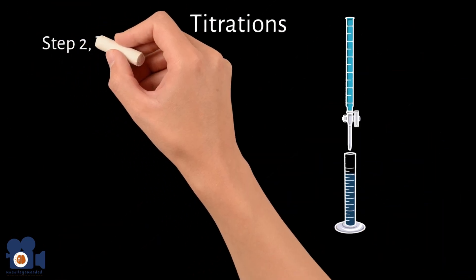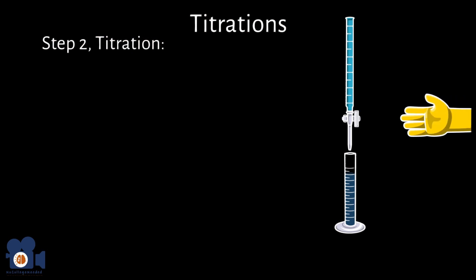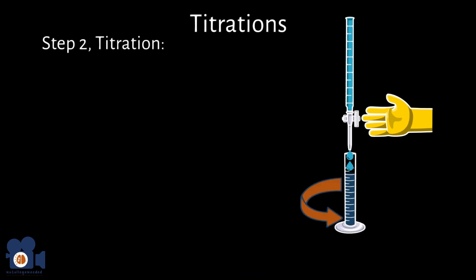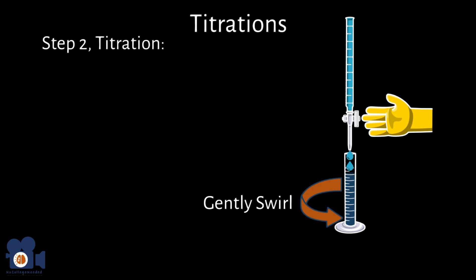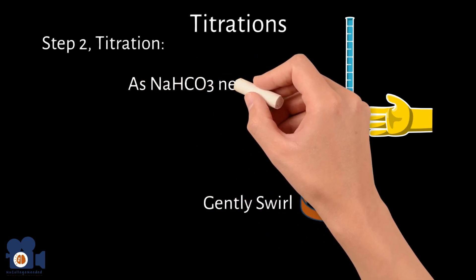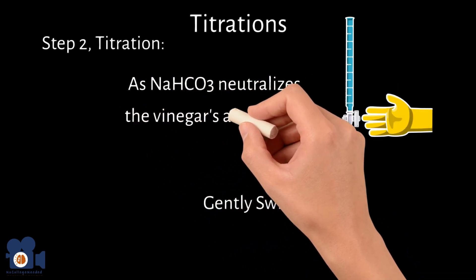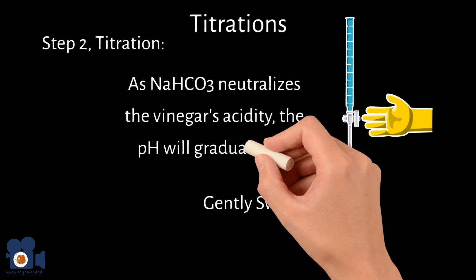Step two, the titration. Now the fun begins. You'll slowly open the burette stopcock, allowing 0.1 molar solution of NaHCO3 to drip into the vinegar solution in the flask. After each addition, we'll swirl the flask gently to ensure thorough mixing. Keep a watchful eye on the solution. As the NaHCO3 neutralizes the vinegar acidity, the pH will gradually rise.